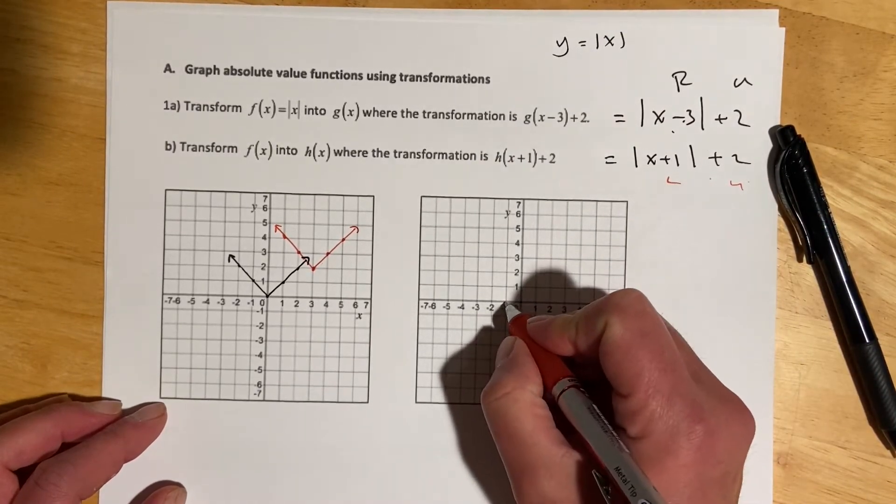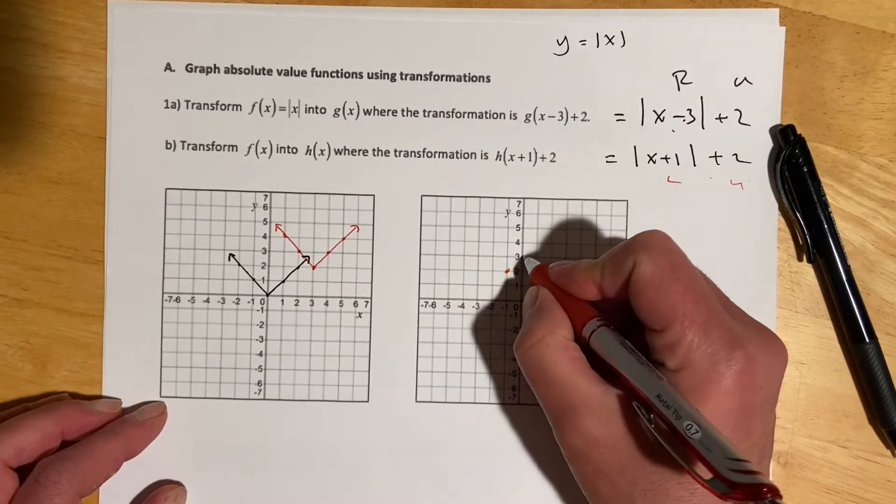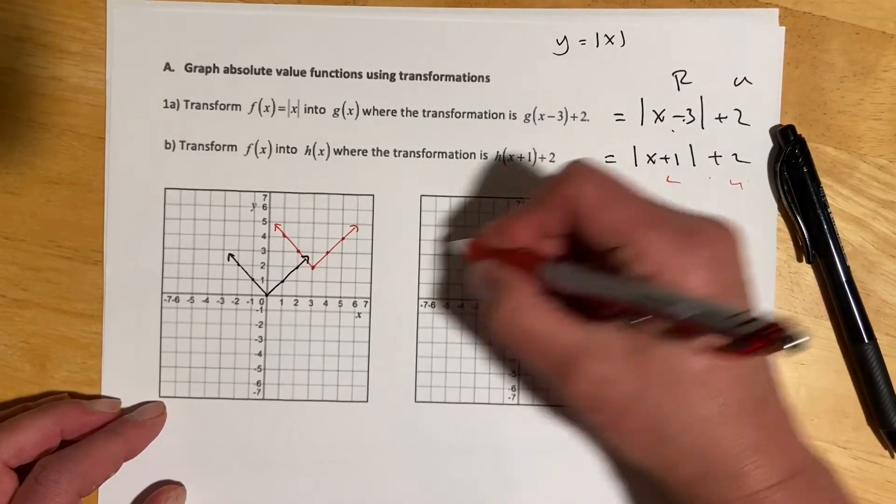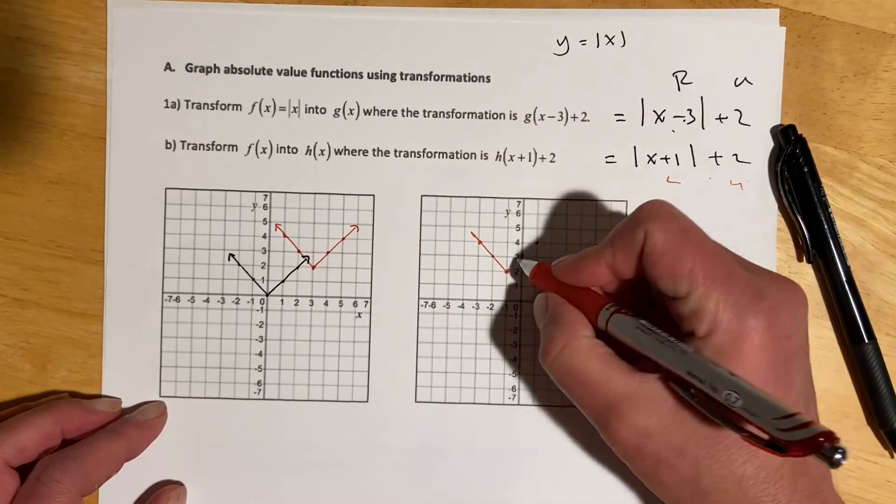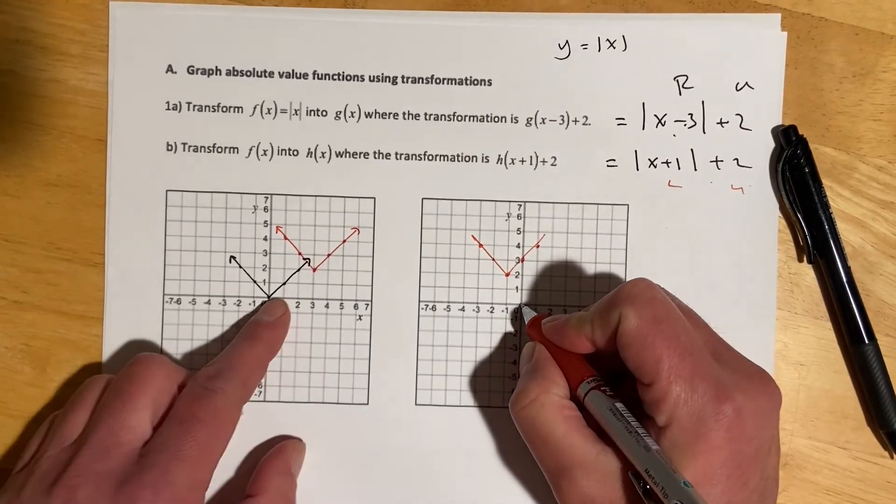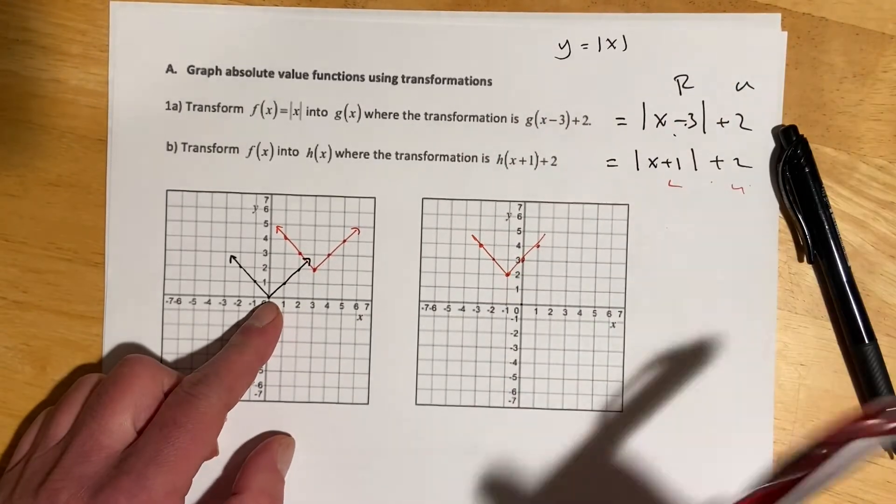From here we go left 1 and up 2. Once you know that shape, you don't need the parent function. You're just taking that vertex from (0, 0) and going to your new starting point.